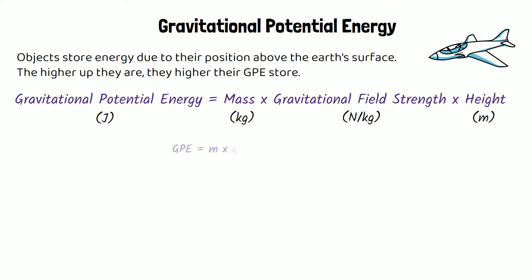If it helps, you can learn the symbol equations. So GPE equals M times G times H, or just GPE equals MGH for short. It's the same thing, just shortened to a symbol equation to help you remember it.